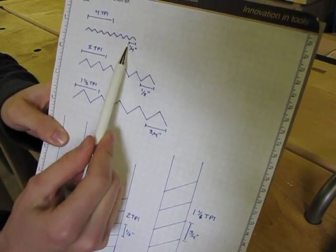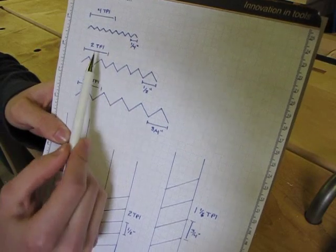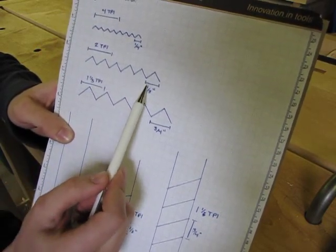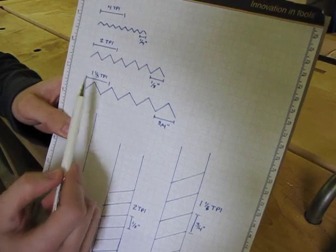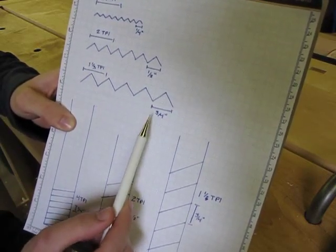As you can see for the four tooth per inch pattern, each tooth is a quarter inch wide. For the two tooth per inch pattern, each tooth is a half an inch, and the one and one third tooth per inch pattern, each tooth is three quarters of an inch wide.